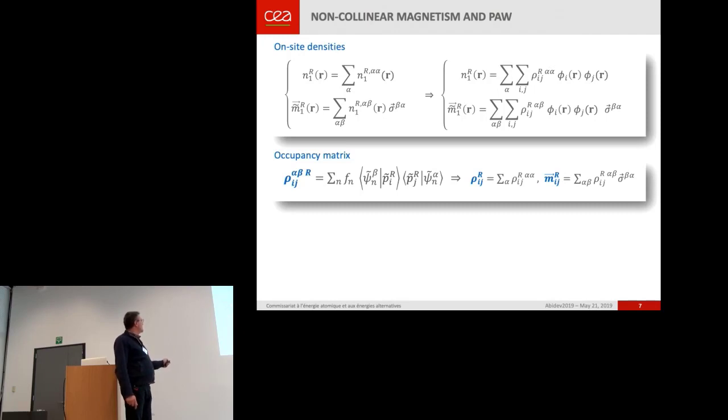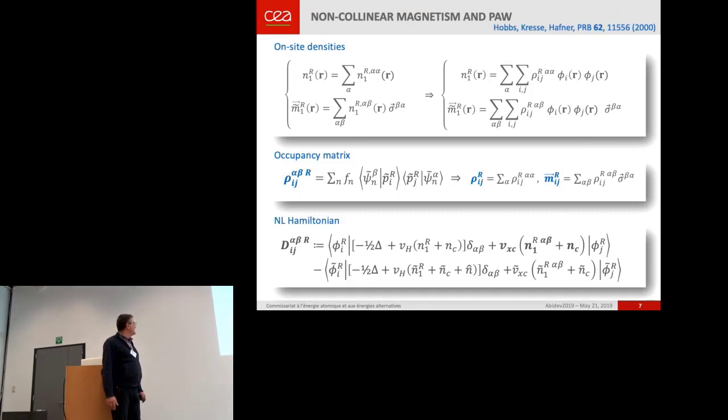You have a contribution for each spinor, alpha and beta. And you can have several two-by-two matrices or a couple of occupancy matrix and what we could name an occupancy magnetization.